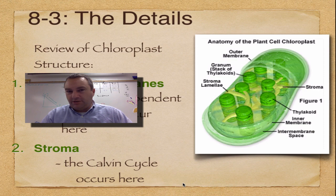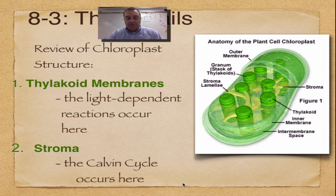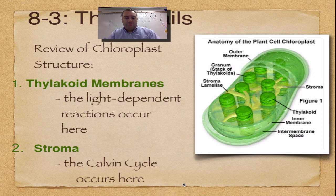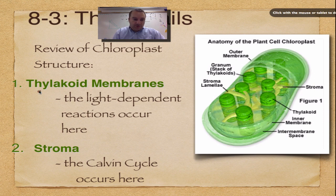We just really need to learn two parts of a chloroplast to help us through this chapter. Now photosynthesis itself happens in two steps, and each of these steps are going to happen in one of these two parts. The first part we're going to go over is the thylakoid. The thylakoid is green because this is where the chlorophyll is found.